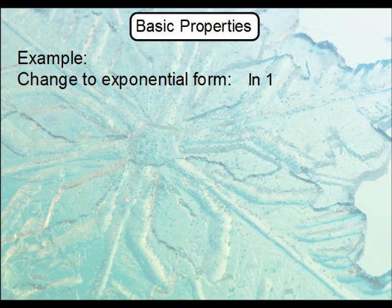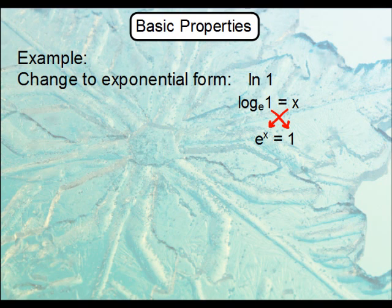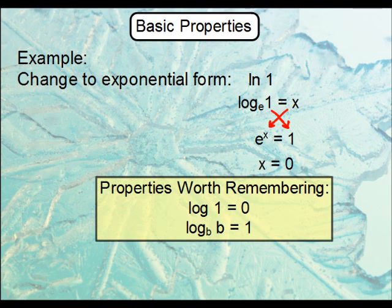Let's try another: change the natural log of 1 to exponential form. Keep in mind the natural log has a base of e, so that's log base e of 1, equal to x. Change this to exponential form: the base is e, so that gets the power, and the other two switch. You have to consider e to what power is 1 — anything to the 0 power equals 1, therefore x equals 0. This brings us to an important conclusion: the log of 1 is 0 regardless of what the base is.